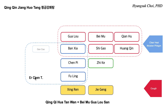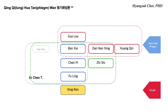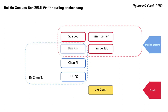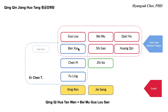This is another variation from Er Chen Tang: Qing Qi Jiang Huo Tang. Jiang Huo means releasing fire. Qing Qi means clear lung heat. Practically, this is a combination of Bei Mu Gua Lou San and Qing Qi Hua Tan Wan. It has Gua Lou, Huang Qin, Xing Ren, and Ji Ke — both of them. And this is a commonly used formula in my office. I do not use either of the two separately — I just use this combined one. Convenient.